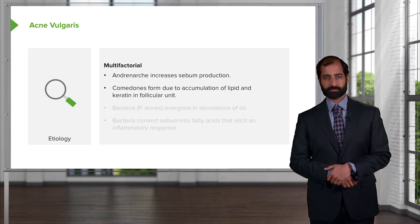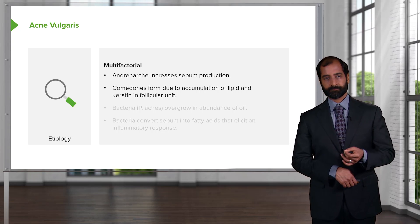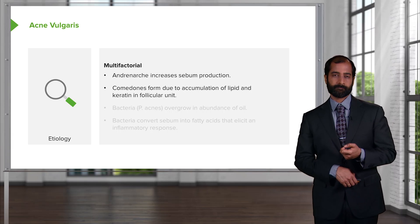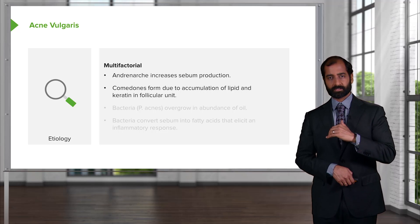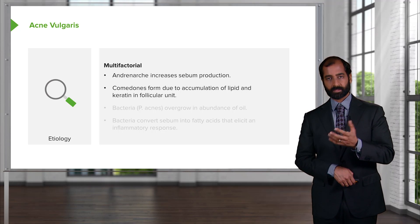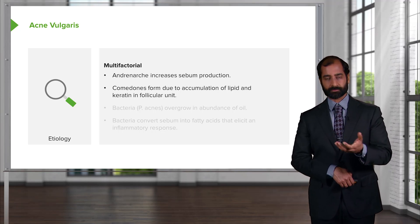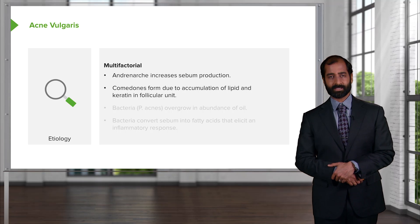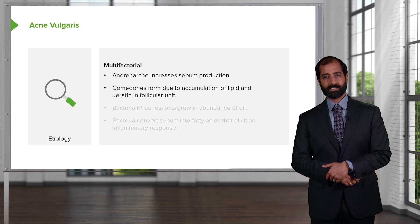Next, you have comedones. A comedone is basically the type of lesion you expect to see with acne. Think of it like a volcano. A blackhead means the comedone is now exposed — the overlying skin or cover has been removed, and the inner contents get exposed to the environment, resulting in oxidation. This oxidation causes a blackish discoloration — a blackhead. Whereas a whitehead means the skin is intact over the comedone, and upon gross examination it appears white. The comedone forms due to accumulation of lipid and keratin in the follicular unit.